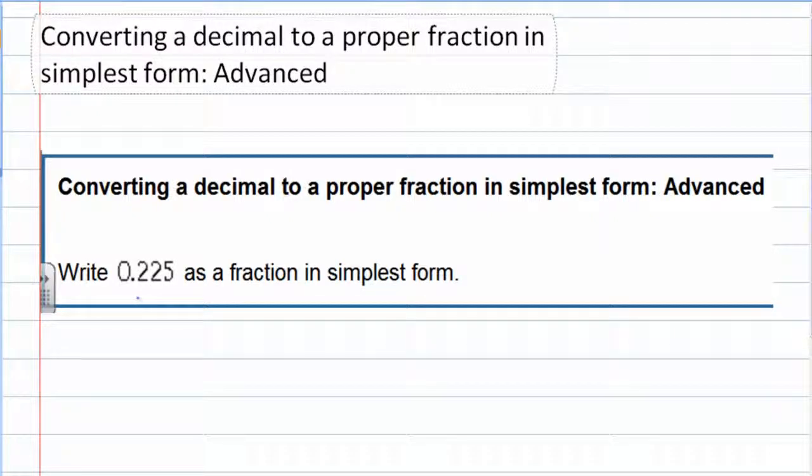Converting a decimal to a proper fraction in its simplest form. In this example we're asked to write this decimal, 0.225, as a fraction in its simplest form.